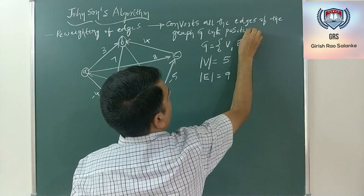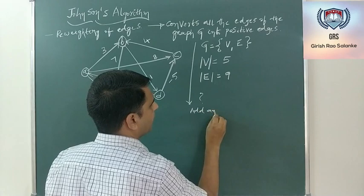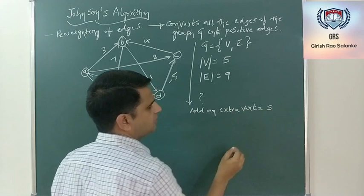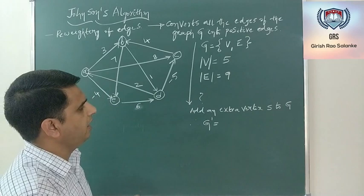How do we do this? We need to add an extra vertex S to G. Therefore my G' will be a new graph denoted with V' and E'. The vertices of this example are A, B, C, D, E.